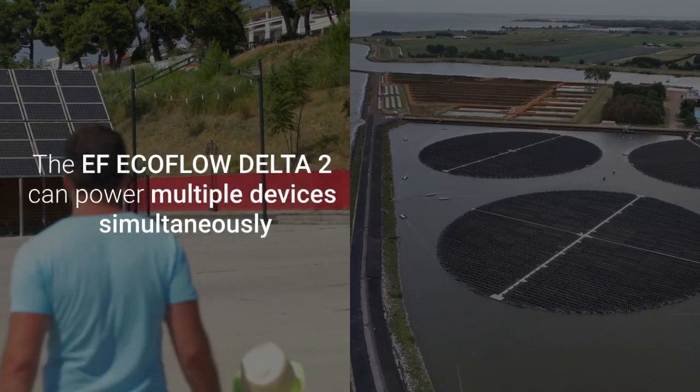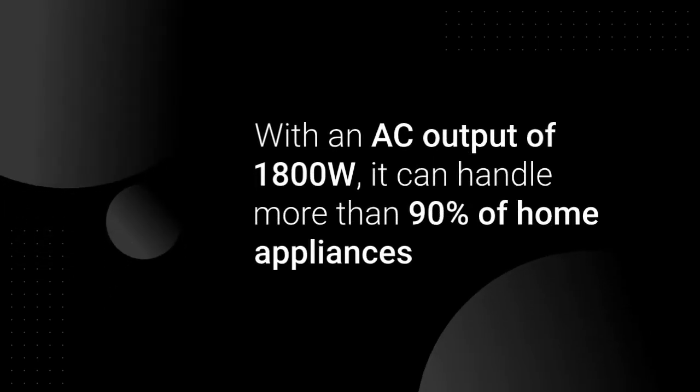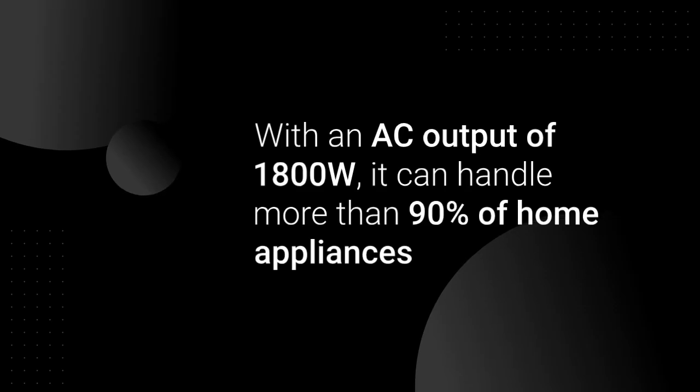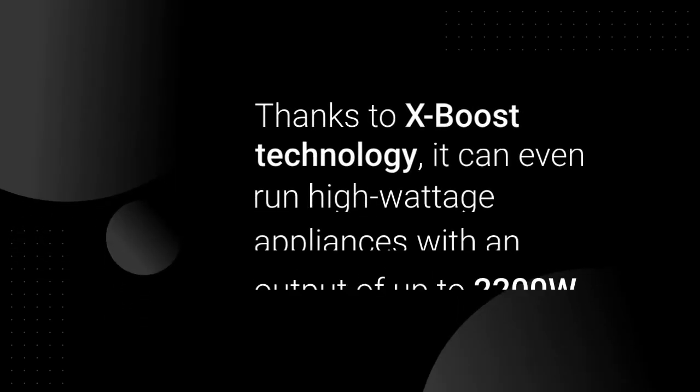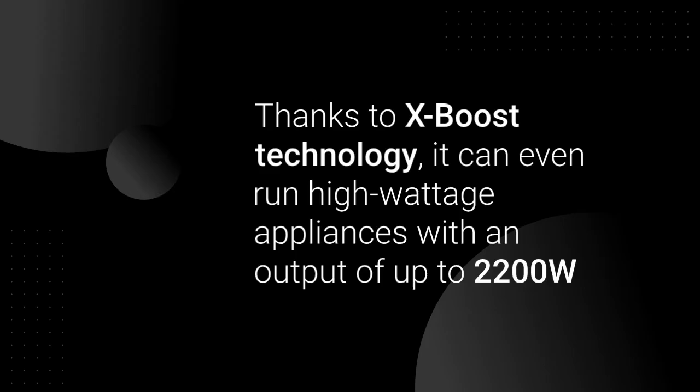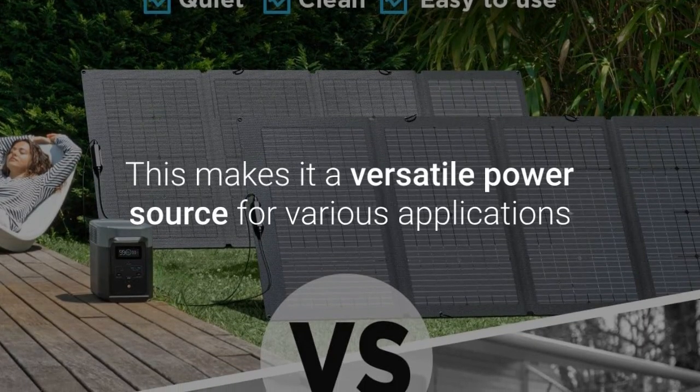The EF EcoFlow Delta II can power multiple devices simultaneously. With an AC output of 1,800W, it can handle more than 90% of home appliances. Thanks to X-Boost technology, it can even run high-wattage appliances with an output of up to 2,200W. This makes it a versatile power source for various applications.